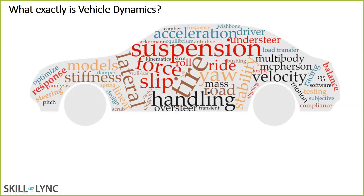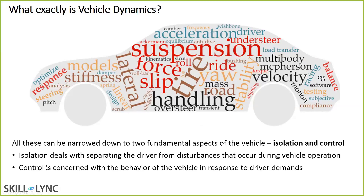Now if we want to group all of these together, I would do it into two categories: isolation and control. Isolation deals with isolating the driver from external disturbances — that comes under ride. You want all the external disturbances from road and wind to be isolated; you don't want everything coming into the driver's cabin. The second category is control — that's stability, steering, and handling. You want the vehicle to follow a particular path and respond correctly to the driver's commands. So that is essentially vehicle dynamics.